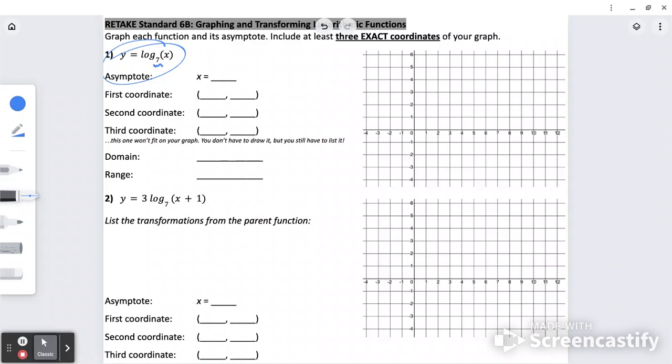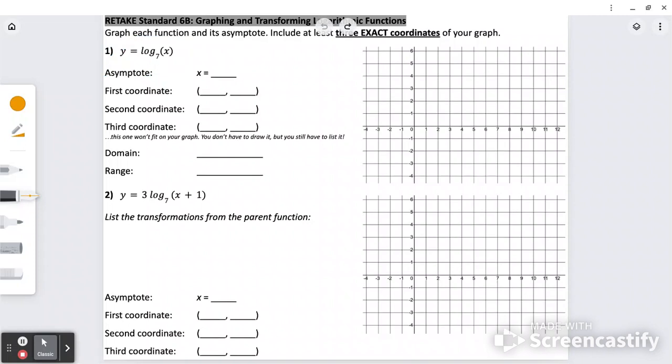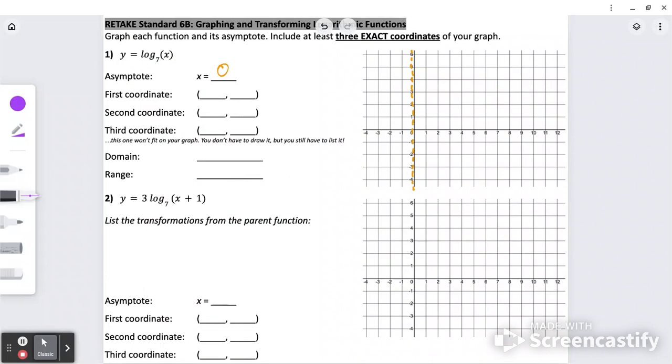It will have an asymptote at zero, in other words right along the y-axis, which is the equation x equals zero. It will also have a first point at (1, 0) no matter what, for every single log.